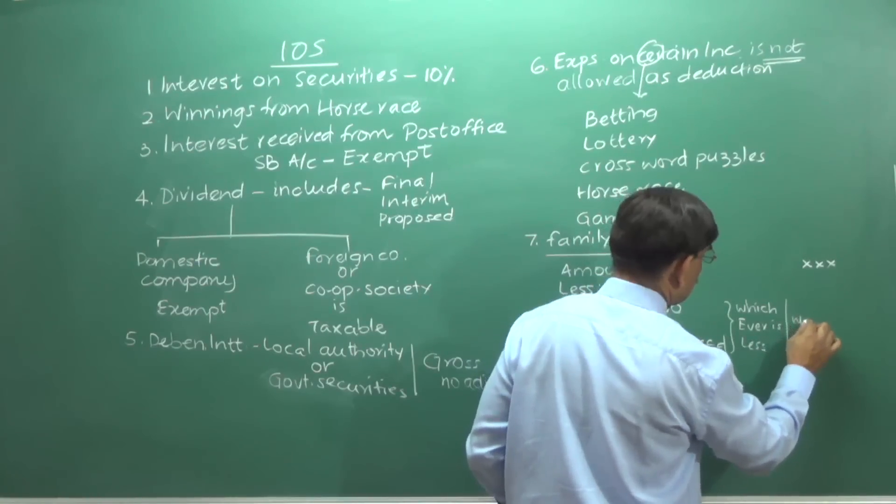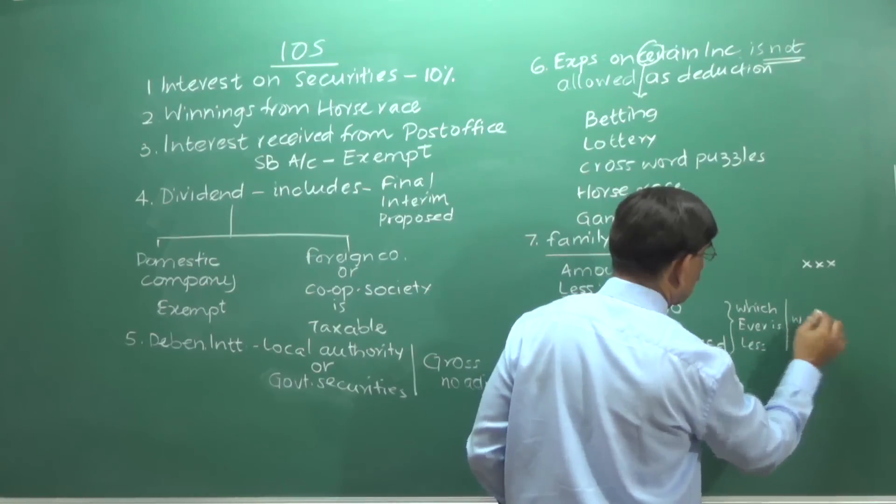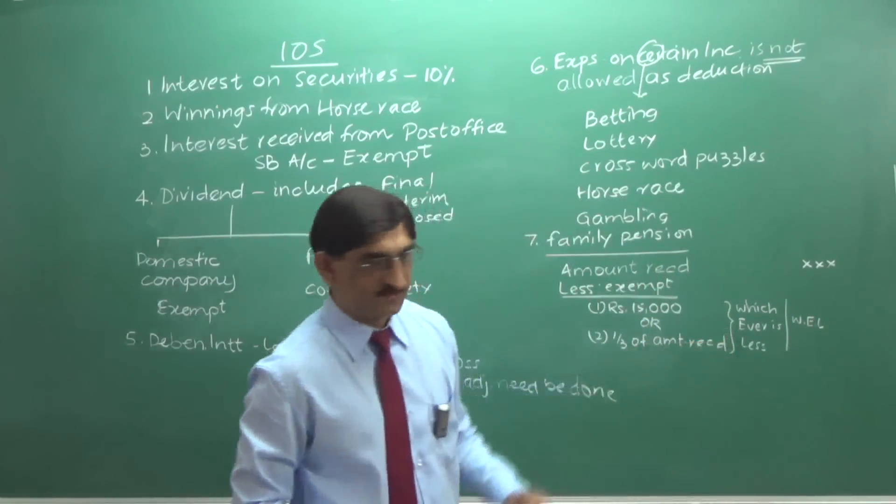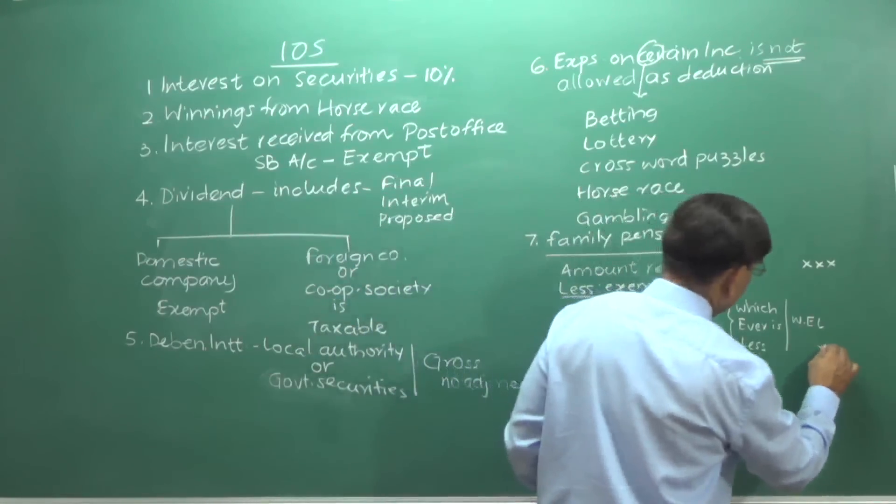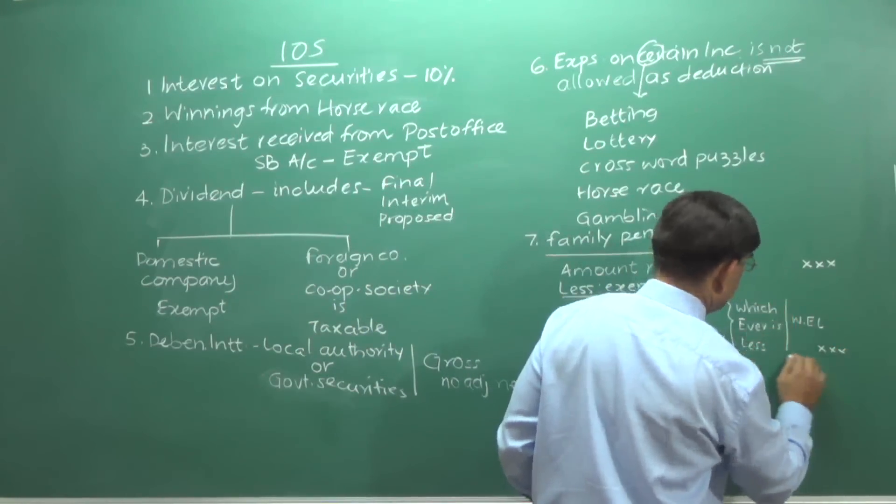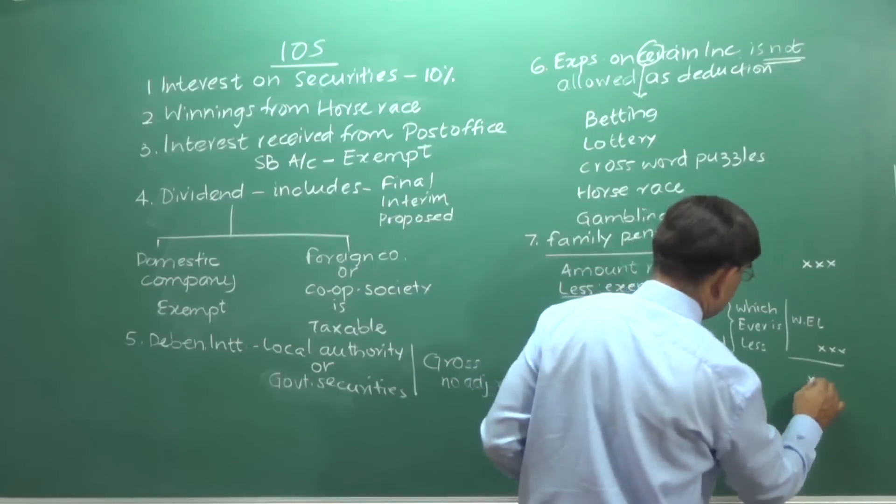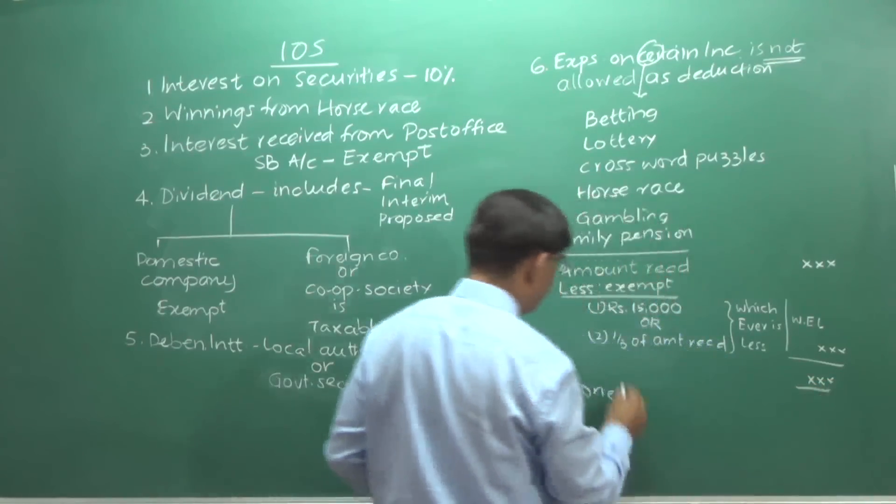whichever is less. Whichever is less in future will be abbreviated as W.E.L. So, the least of these two will be deducted. Least of this or this will be deducted and this will be the taxable family pension.